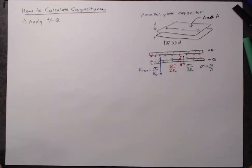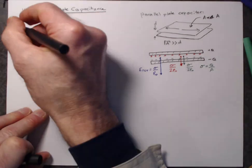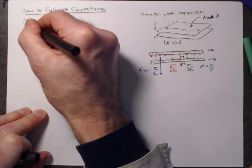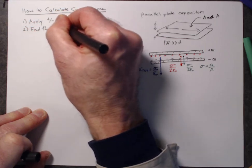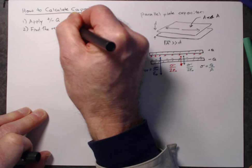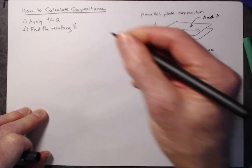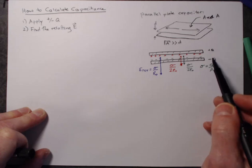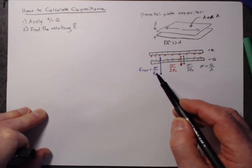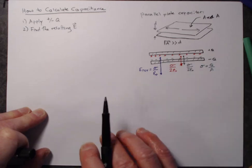So I was getting ahead of myself slightly, because I actually just did step two, which is find the resulting electric field. So we just figured that out. The resulting electric field that came from applying the plus and minus q is just sigma over epsilon naught, where sigma is q over a.